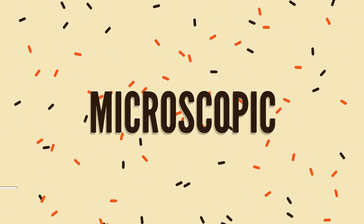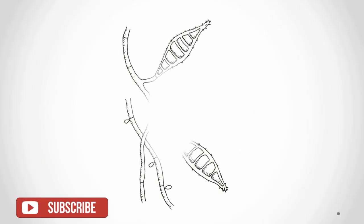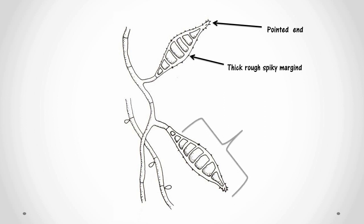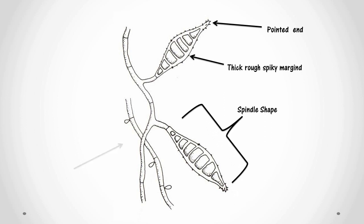Microscopic characteristics: Septate hyaline hyphae with numerous macroconidia, which are long, spindle-shaped, rough, thick-walled, and characteristically tapering to knob-like ends. Usually more than six compartments are seen in the macroconidia.